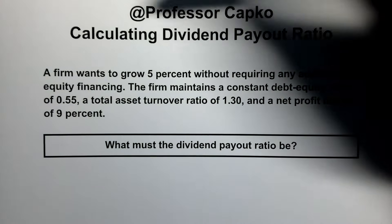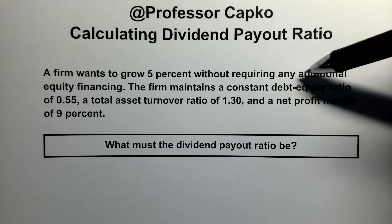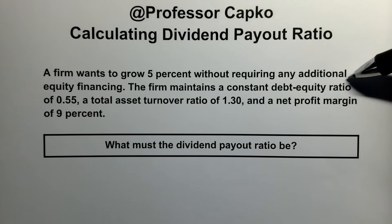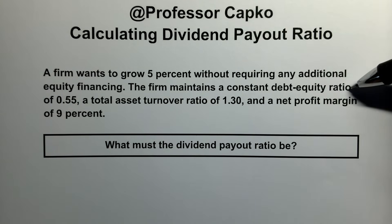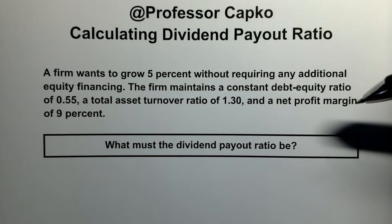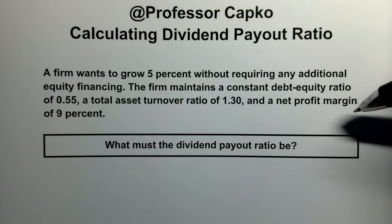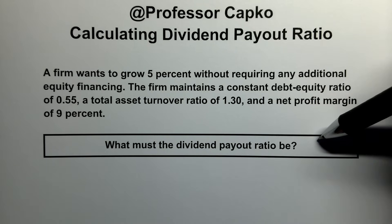In this problem, you're told that a firm wants to grow 5% without requiring any additional equity financing. The firm maintains a constant debt-to-equity ratio of 0.55, a total asset turnover ratio of 1.30, and a net profit margin of 9%. You're asked to find the dividend payout ratio.